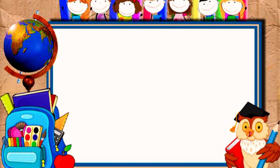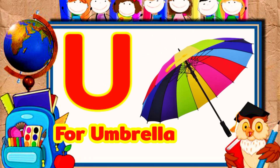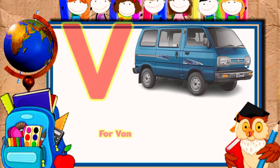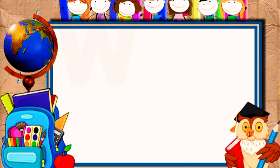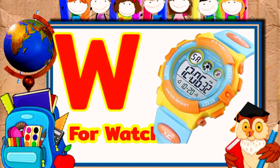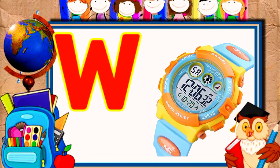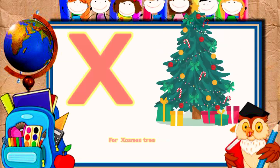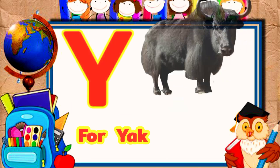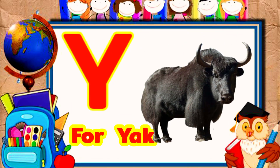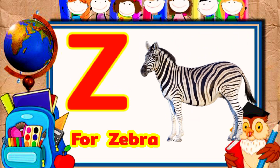U for umbrella, V for red, W for watch, X for accessory, Y for yard, Z for zebra.